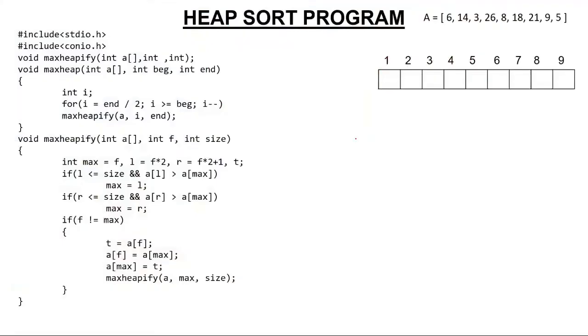Let's start. Here you have an array having 9 elements: 6, 14, 3, 26, 8, 18, 21, 9, and 5. Let me make a tree of it, which is an almost complete binary tree or complete binary tree: 6, 14, 3, 26, 8, 18, 21, 9, and 5.